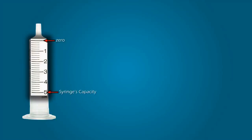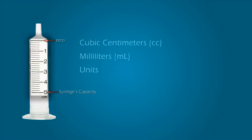On the barrel are bold graduation marks. Graduation marks allow for the measurement of the syringe's contents. The first graduation mark represents zero, while the last graduation mark represents the syringe's capacity, or the total amount the syringe was designed to hold. These marks typically represent cubic centimeters (cc's), milliliters (mls), or units.